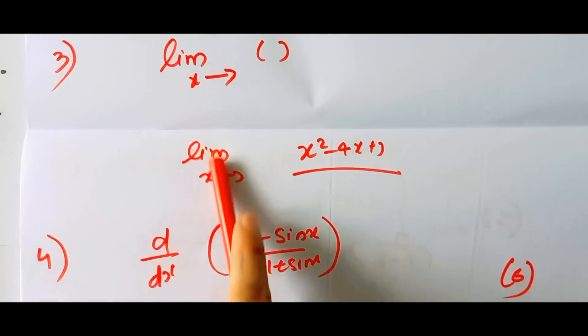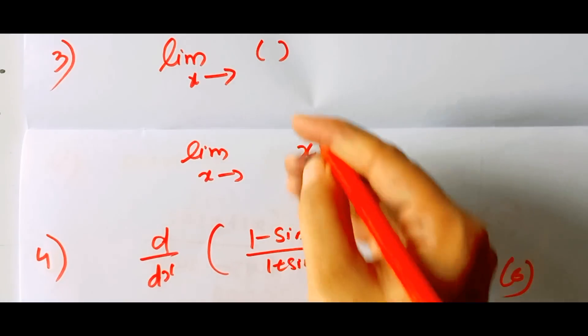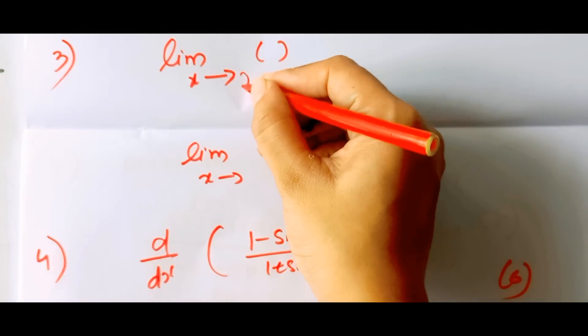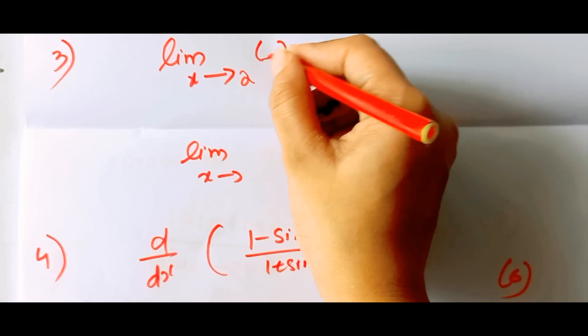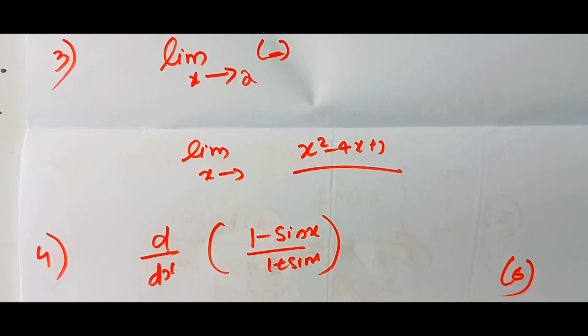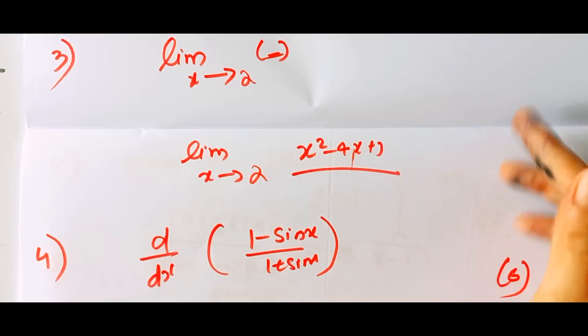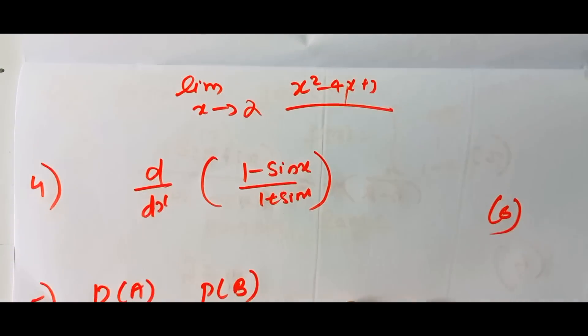Now let's look at limits and derivatives. Look at these three types. One simple: say limit — limit x tends to 2, there is a function. Limit x tends to a value — division. That is a 2-mark question.